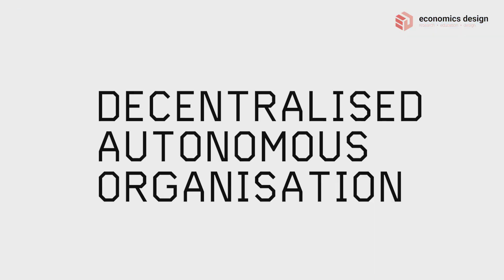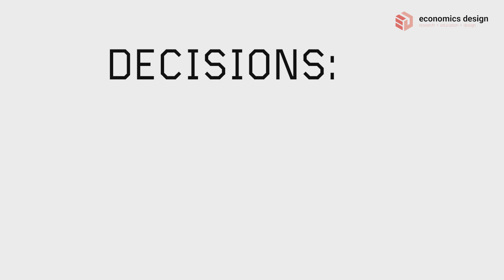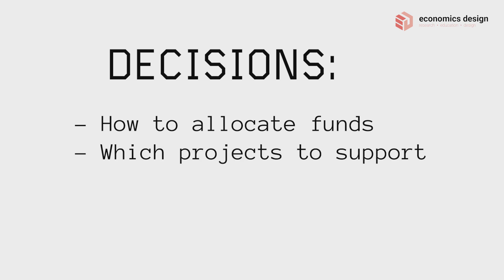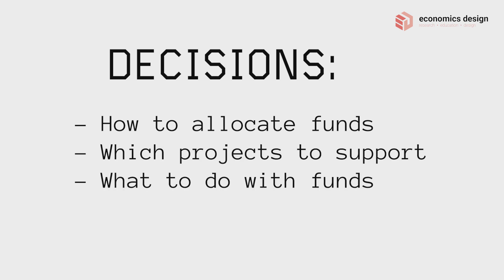Going back to where we left off: the DAO is a new way of governance and decision making. Once decisions are made, they can be executed by smart contracts. What decisions are we talking about here? To get your head around DAO, these are some decisions to be made — for example, how to allocate funds, which projects to support, and what to do with the funds.